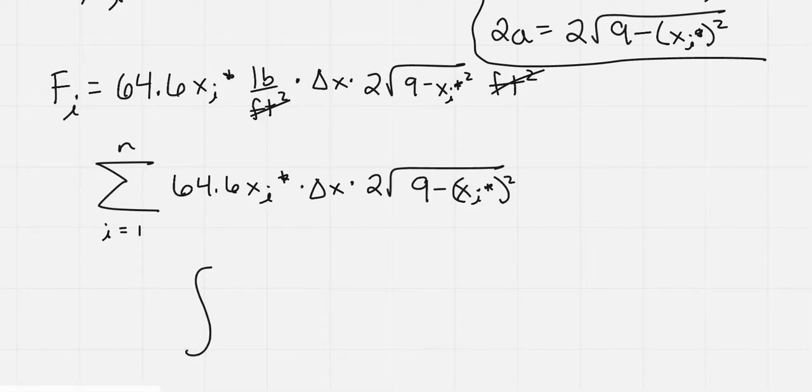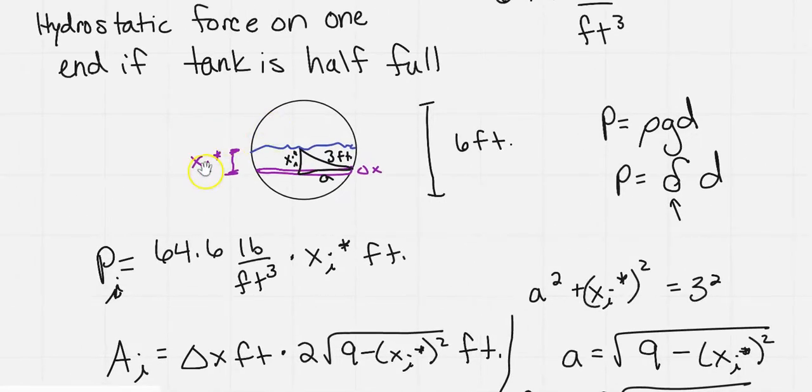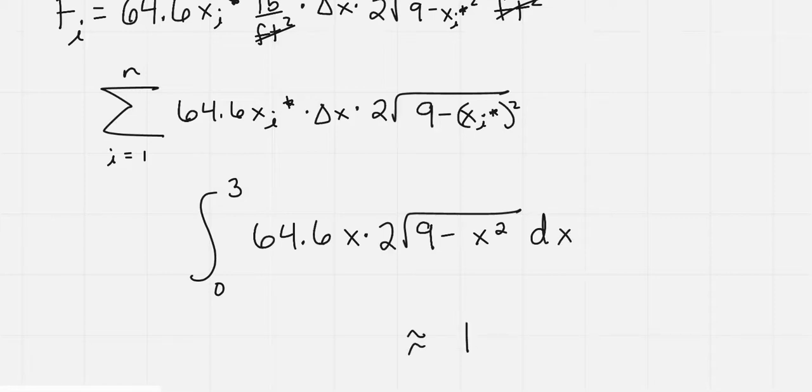Now what are the limits of integration going to be? So let's go back up to our picture, and we started at the middle here, and I called my x zero there. And then we went down to the bottom, but that's just a radius of 3. So the vertical distance is just 3 down to the bottom. So we have 0 to 3, 64.6 x times 2 times the square root of 9 minus x squared dx. And if you were to work this out, you would get 1,162.8 pounds.